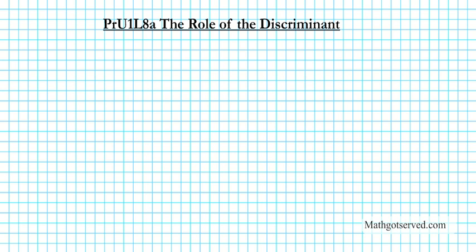Hey there students. In this clip we're going to be going over three examples on how to use the discriminant to determine the nature of the roots of polynomial equations. So we can write down the title: the rule of the discriminant. That's what we're going to be considering today. Let's write down the instructions for the notes first and then we'll go ahead and take a look at the examples.